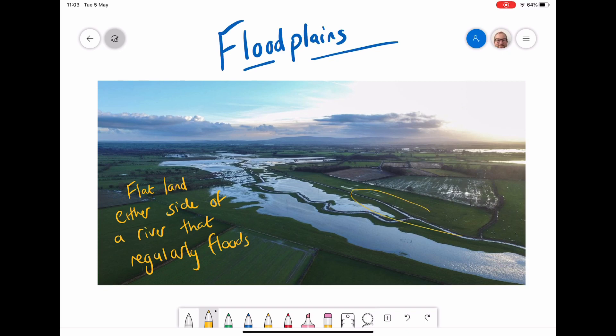We can see here that we've got the main course of the river, and as you can see at various points there is flooding on either side of the river. Some rivers can do this on a yearly basis, sometimes a couple of times a year—it depends on the river.